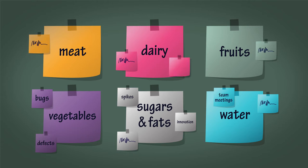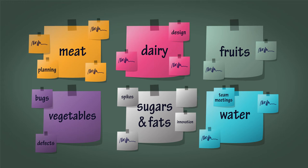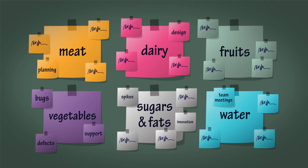For example, the basics of planning and retrospectives might fall into the meat or vegetables categories. Place these sticky notes under the appropriate food group heading and cluster and consolidate any similar ones. For example, bugs, defects, and support could be consolidated.